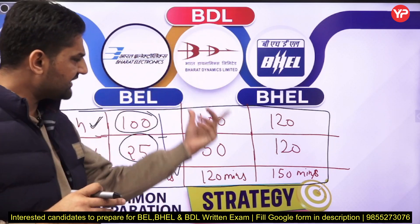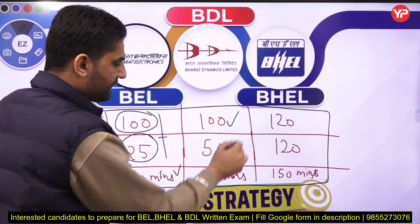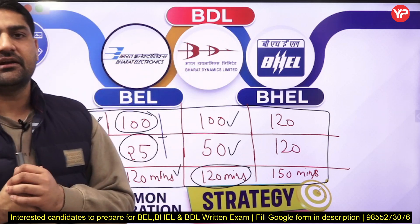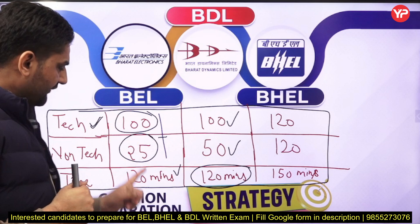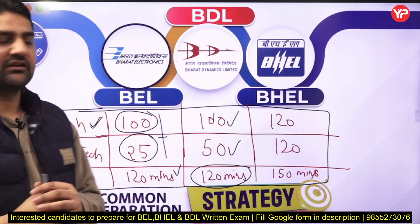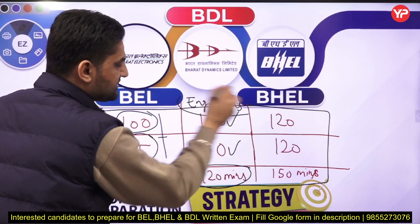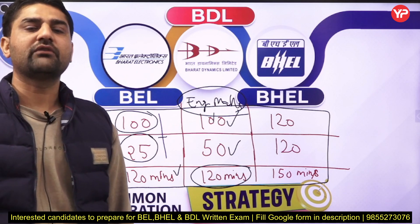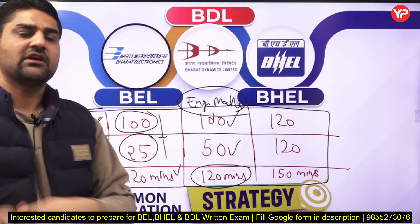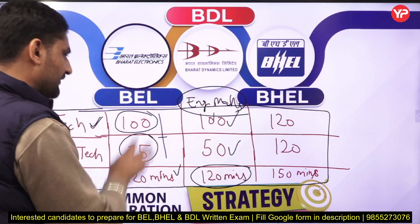Now coming to the BDL exam which recently came: the exam pattern is 100 technical questions and 50 non-technical questions, and 120 minutes are provided. Comparing BEL and BDL — BEL has 125 questions in 120 minutes and BDL has 150 questions in 120 minutes. On the syllabus part, the difference is that in BDL you also have to cover Engineering Mathematics, which is not normally part of public sector exams recruiting without GATE. Engineering Mathematics is being asked in the BDL examination, whether it is for the mechanical branch or the electronics branch.